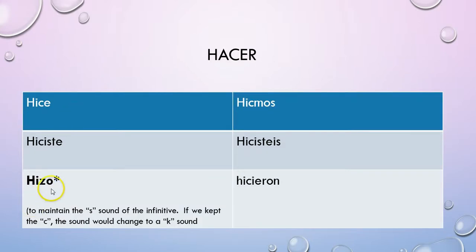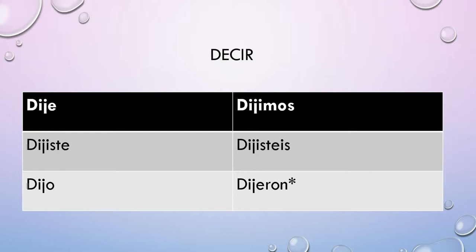For HACER, notice that in third person singular my C changes to a Z, and that's because I want to maintain the S sound of the infinitive HACER. If I kept the C, a C followed by an O makes a K sound, so I change my C to a Z to keep that S sound. For DECIR, the ellos and ellas form is DIJERON, not DIJIERON.